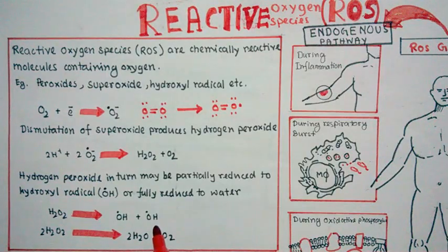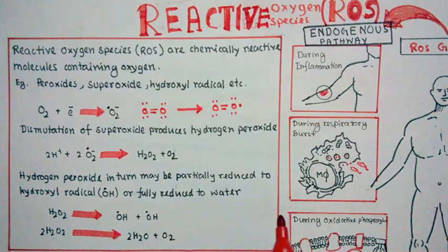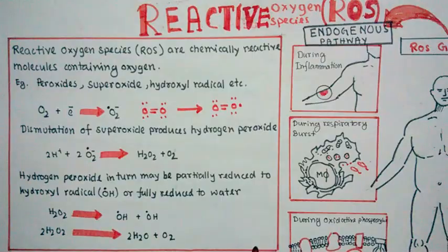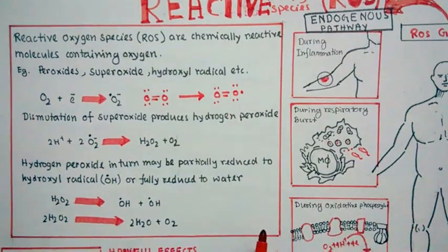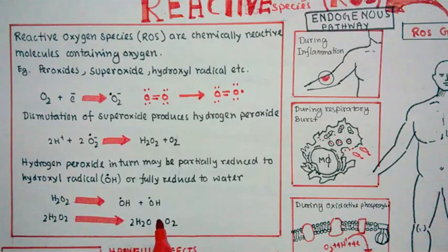Hydroxyl radical has plenty of harmful effects on our body, and the enzymatic defense system which actually combats ROS cannot combat this hydroxyl radical. So basically we need antioxidant to combat this hydroxyl radical.